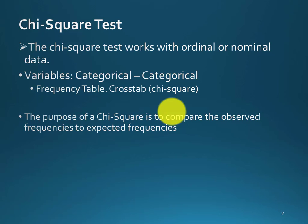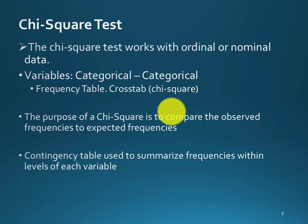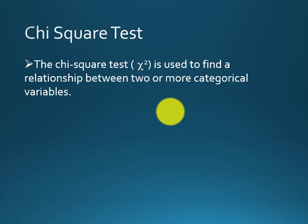A frequency table or crosstab is used to compare the observed frequency and expected frequency. The purpose of chi-square is to find the associational relationship between observed frequency and expected frequency. A contingency table is used to summarize the frequency within the level of each variable.